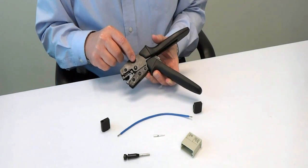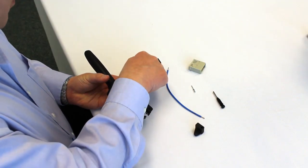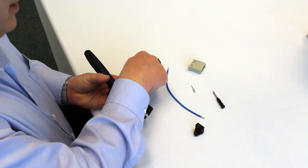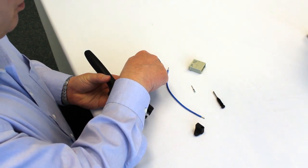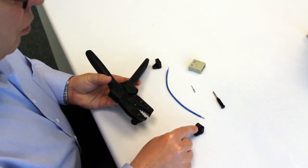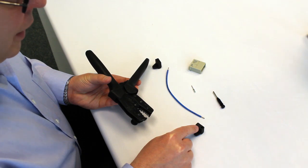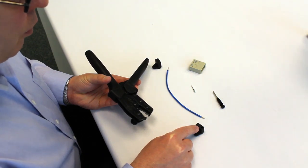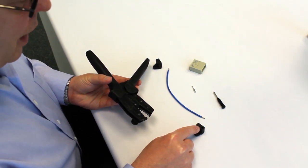Two locators are supplied with the tool. One locator is for our Han-E crimp contacts, contacts beginning with part number 0933. The second locator is for contacts beginning with part number 0915, our Han-D crimp contact.